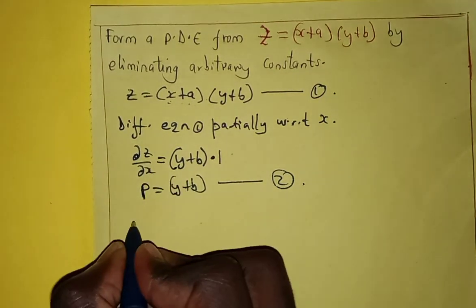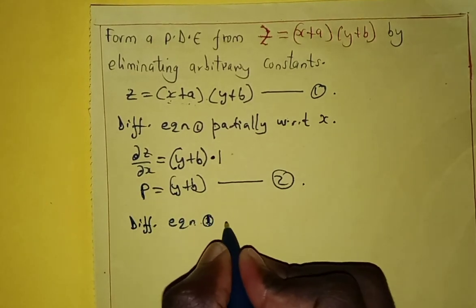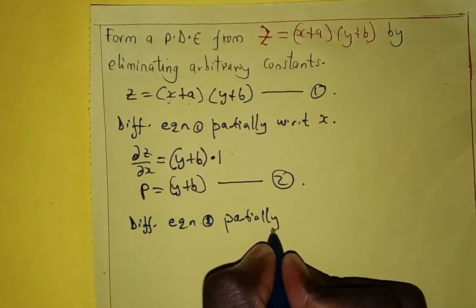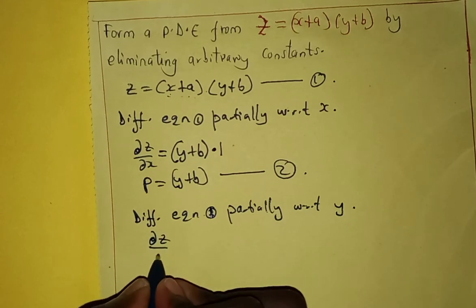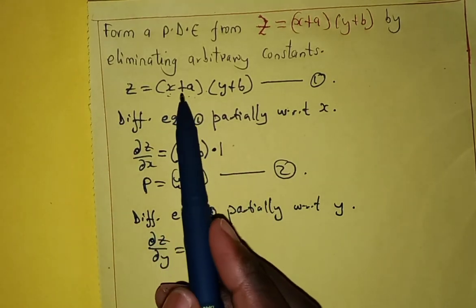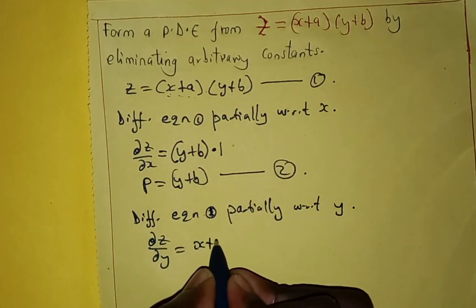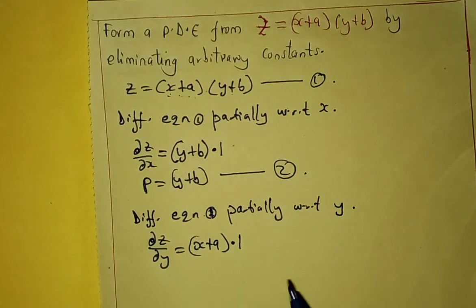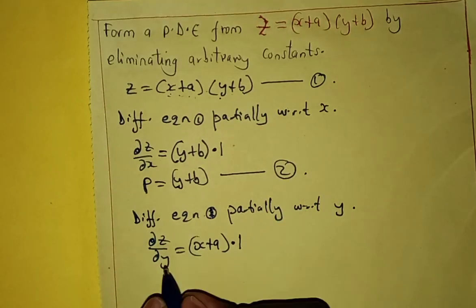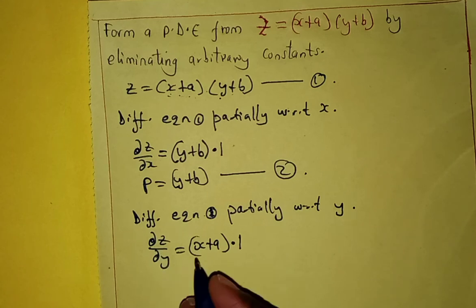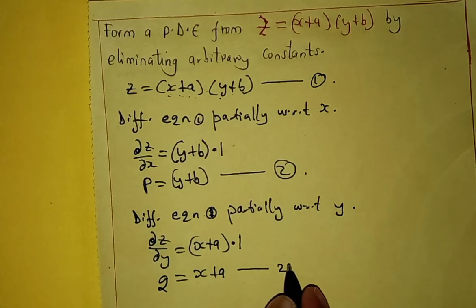Next step, we differentiate equation number 1 partially with respect to y. We keep the first part constant as we differentiate, so we have x plus a times 1, since differentiating y gives 1, and differentiating constant b gives 0. So, partial z over partial y is the same as q, giving us q equals x plus a. This is equation number 3.